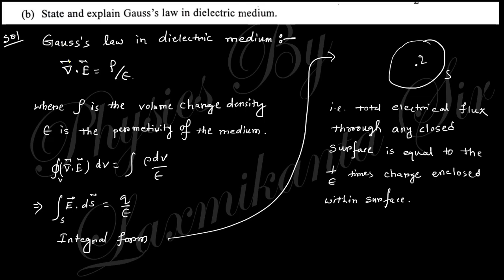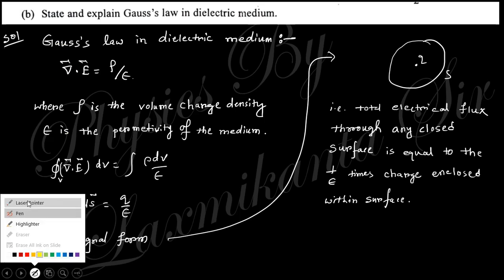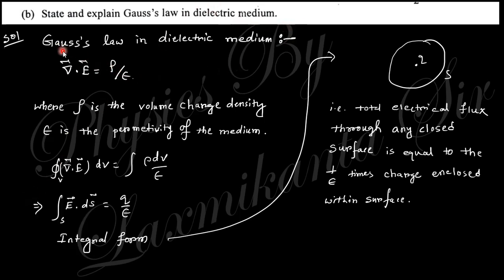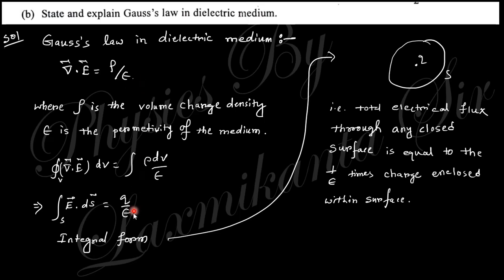Next question: state and explain Gauss's law in a dielectric medium. In a dielectric medium, Gauss's law in differential form is divergence of D equals rho over epsilon. Taking the volume integration gives the integral form. Here rho is the volume charge density and epsilon is the permittivity of the medium.